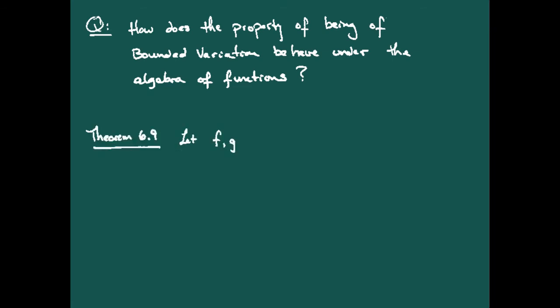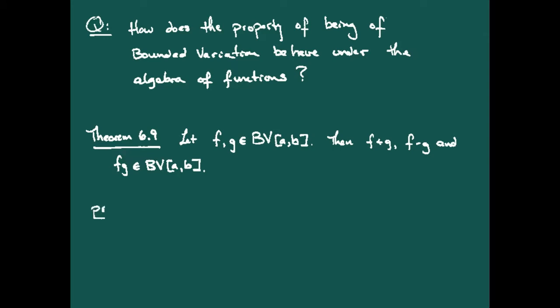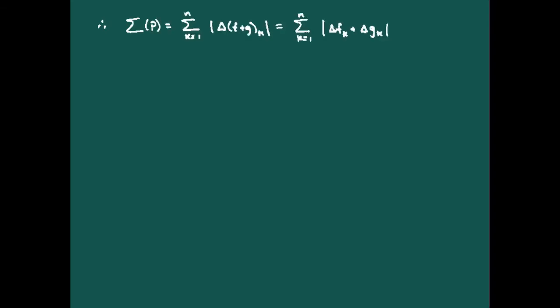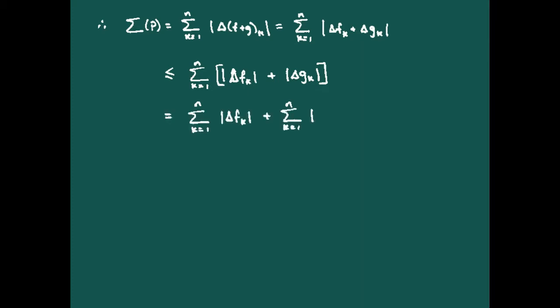Theorem 6.9 states: if f and g are functions of bounded variation, then the sum, difference, and product are also of bounded variation. For the proof, we start with a partition p of [a, b]. Looking at Δ(f + g)_k, writing out the definition and rearranging, the delta of the sum is just the sum of the deltas. Adding up all terms and applying the triangle inequality, we separate the variation of the sum into the sum of the variations, giving our upper bound. So f + g is of bounded variation.